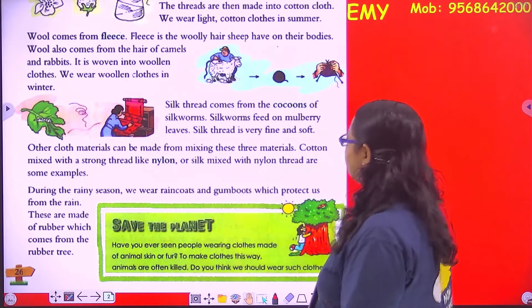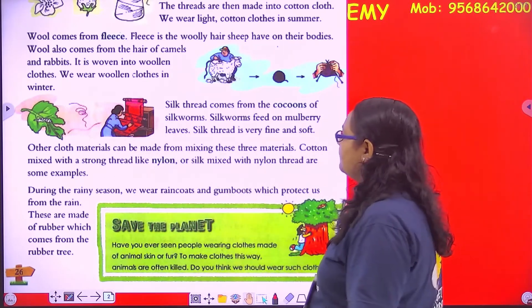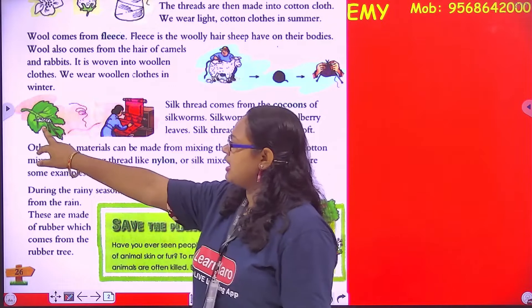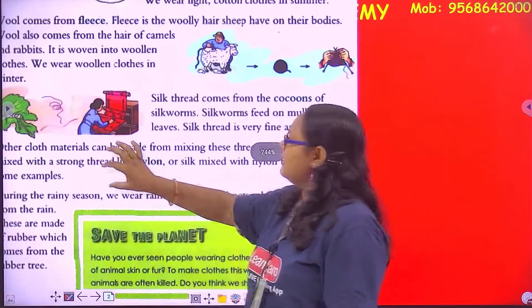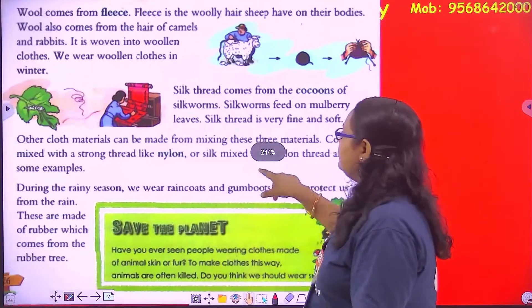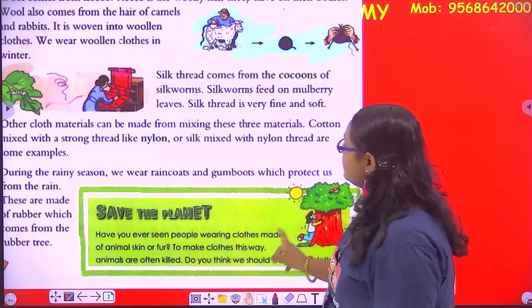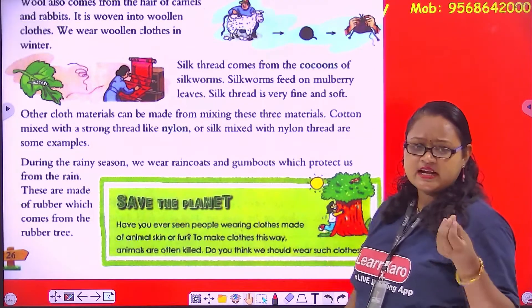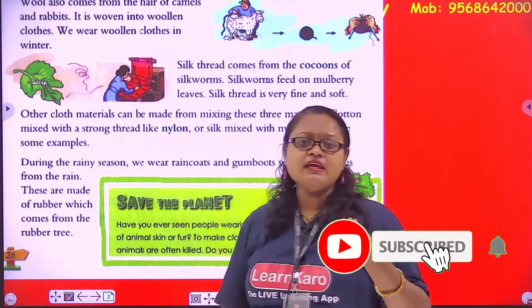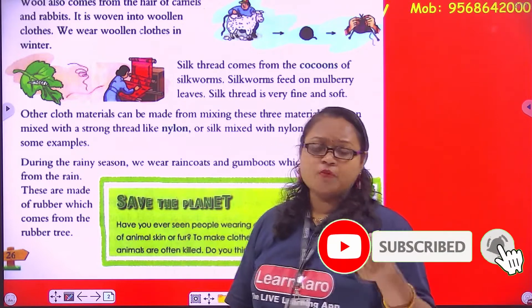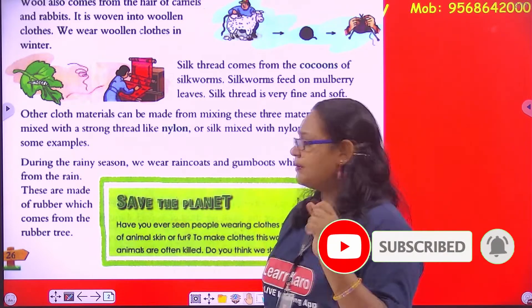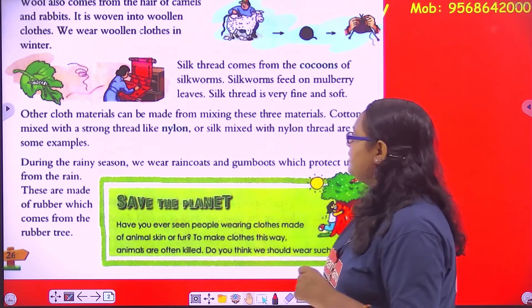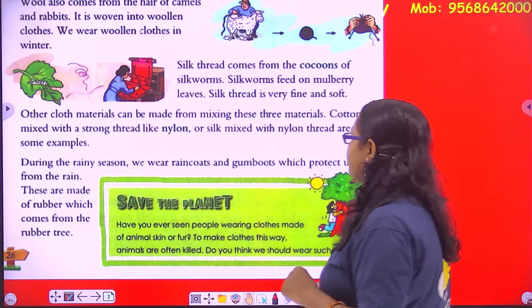Silk thread comes from the cocoons of silkworm. Silkworms feed on mulberry leaves. You can see the cocoon — that is called the cocoon of the silkworm. Silk thread is very fine and soft. Silk cloth is very fine and very soft.